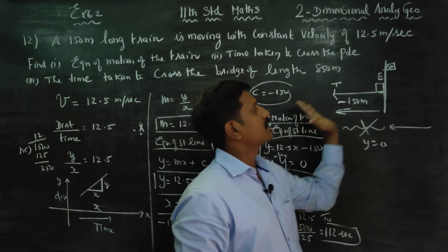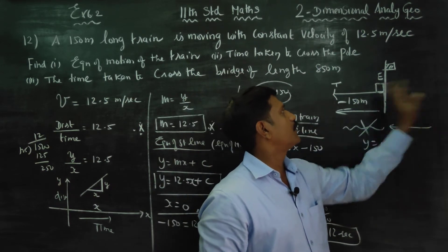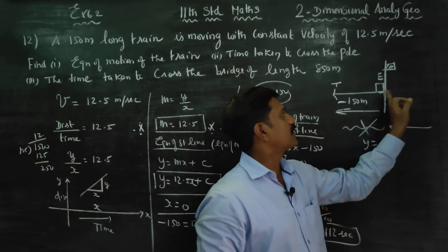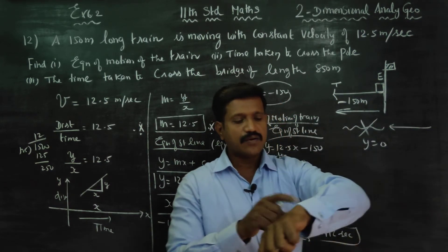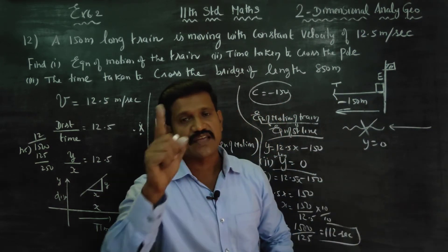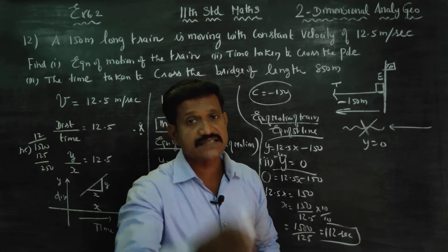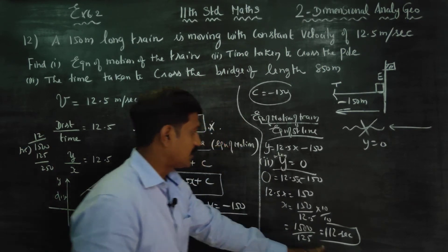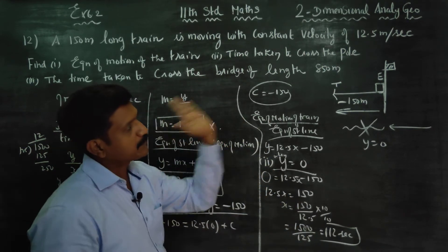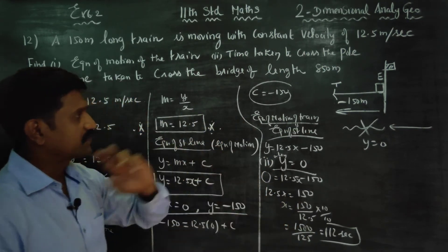The engine crosses, then the tail crosses. The clock is equal to 12 seconds. The train and the post cross - this is the first question answer.